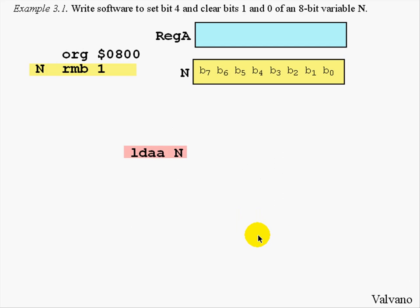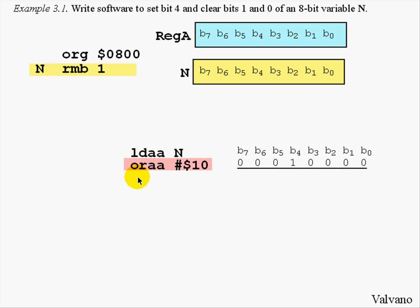So the basic way we will solve this problem is to first bring the variable N into the accumulator. The LOAD instruction will make a copy of the variable N into the register A, here signified by the B7 through B0. In this solution, we will set bit 4 first, and we'll do that using the OR operation.